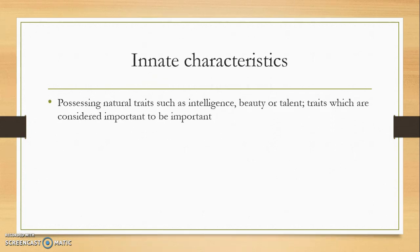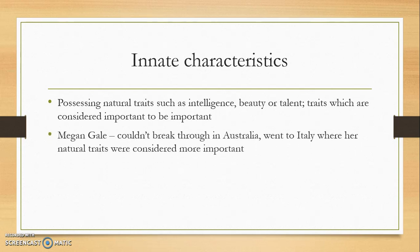Innate characteristics: these people demonstrate positive deviance because they possess natural traits such as intelligence, beauty, or talent — traits which are considered important by society, a culture, or a group. Think Megan Gale — she couldn't break through in Australia because her particular beauty wasn't as valued here. But when she went to Italy, her natural traits were considered much more important, and she became a famous model internationally. Beauty was still valued in Australia, but it was in Italy where it was fully recognised.